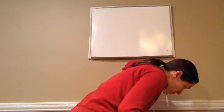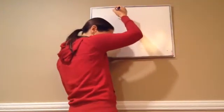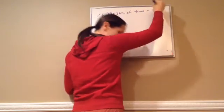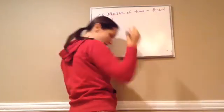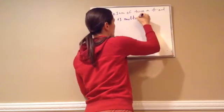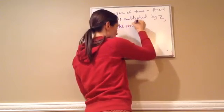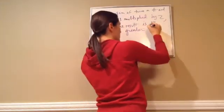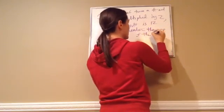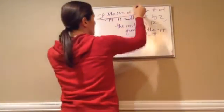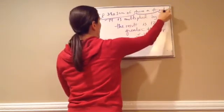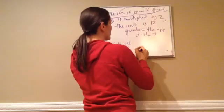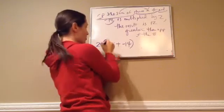Now, all right. Now let's do another one. If the sum of twice a number and negative 14 is multiplied by 2, the result, let's try to write this quickly, is 12 greater or greater than the opposite of the number, than the opposite of the number. Okay. Let's write this down. If the sum of, the sum of what?